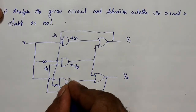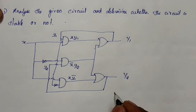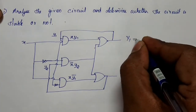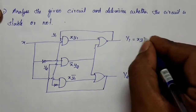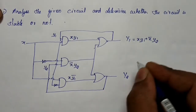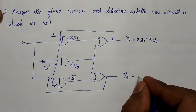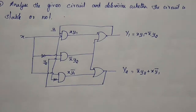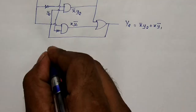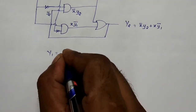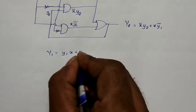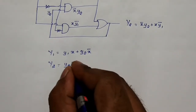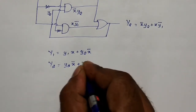So here xy1-bar, and therefore Y1 is equal to xy1 plus x-bar·y2. Likewise, Y2 is equal to x-bar·y2 plus xy1-bar. After finding these expressions, Y1 = y1·x + y2·x-bar, and Y2 = y2·x-bar + y1-bar·x.